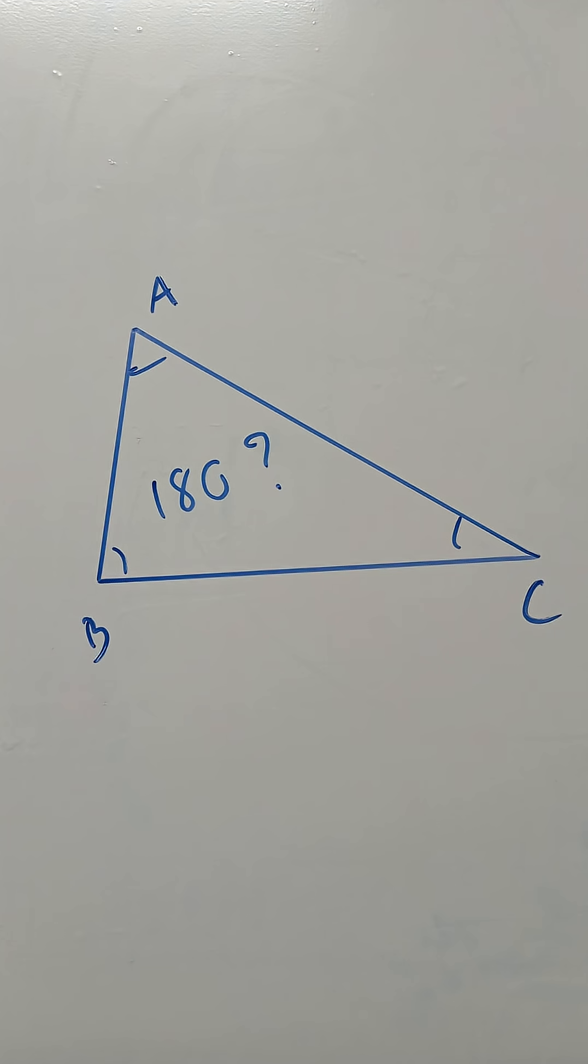Why the total angle of a triangle is 180. Take the triangle ABC as an example.